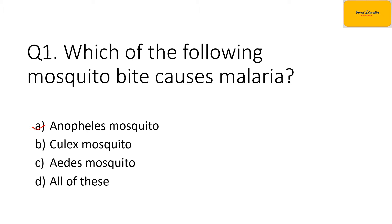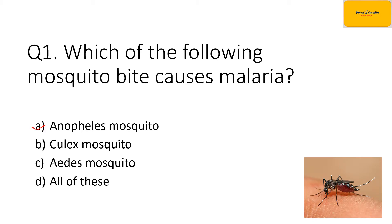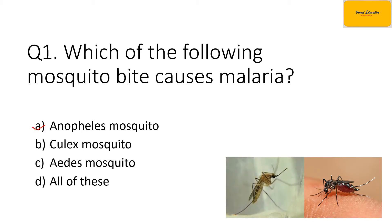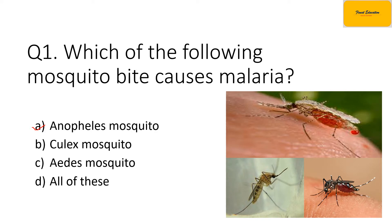Generally we think that every mosquito bite causes malaria, but that is not the case. According to their appearance and behavior, there are different types of mosquitoes — Aedes mosquito, Culex mosquito, and Anopheles mosquito. Different mosquito bites are responsible for different diseases. Specifically for malaria, only the female Anopheles mosquito bite causes malaria.